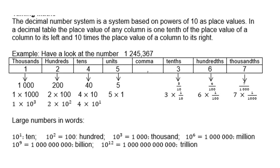The decimal number system is a system based on powers of 10 as place values. In a decimal table, the place value of any column is one-tenth of the place value of a column to its left and ten times the place value of a column to its right.